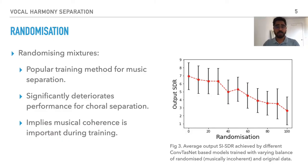While training our models, we saw that randomizing training mixtures — that is, selecting parts of different songs to generate an artificial training example — ends up significantly hurting our model's performance.